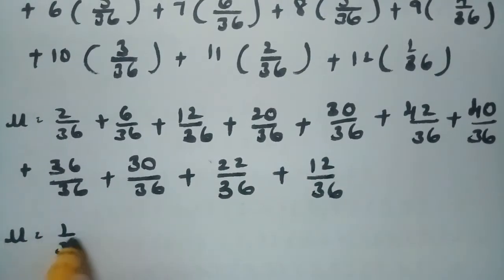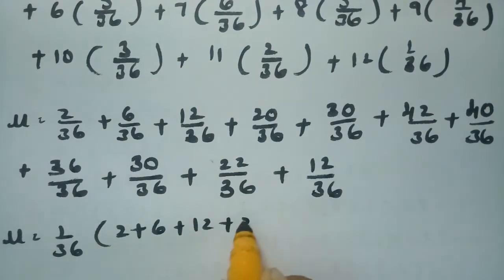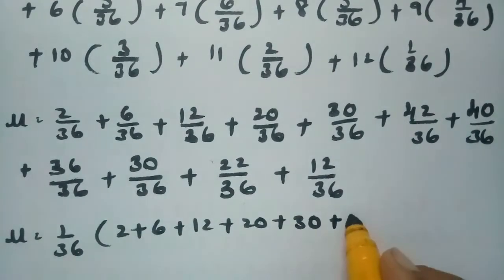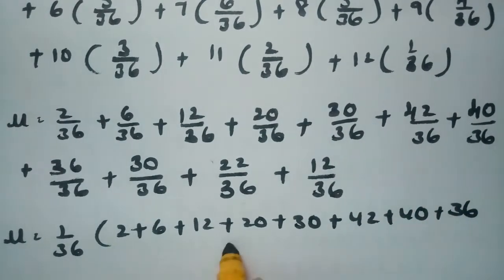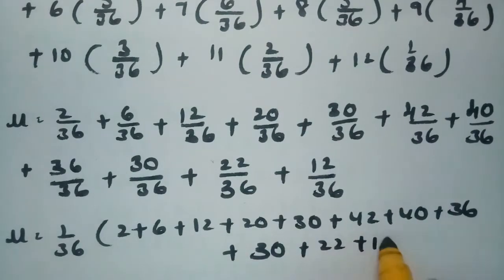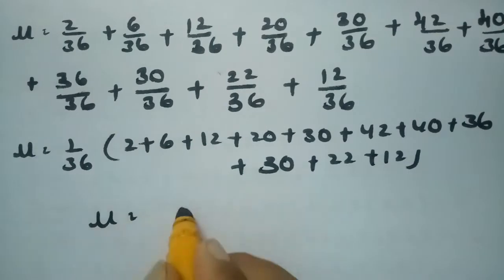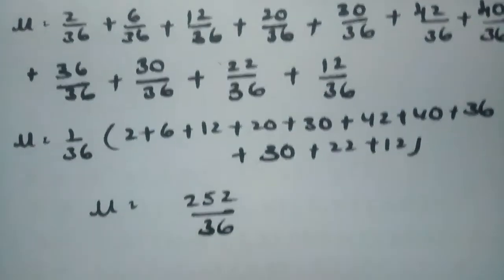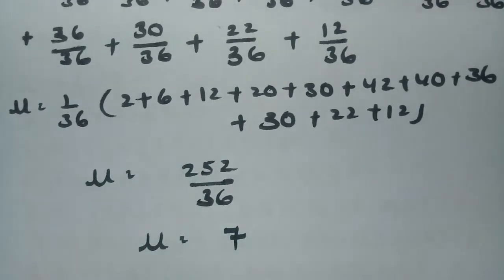Taking 1/36 as common, we sum: 2 + 6 + 12 + 20 + 30 + 42 + 40 + 36 + 30 + 22 + 12 = 252. So μ = 252/36 = 7.